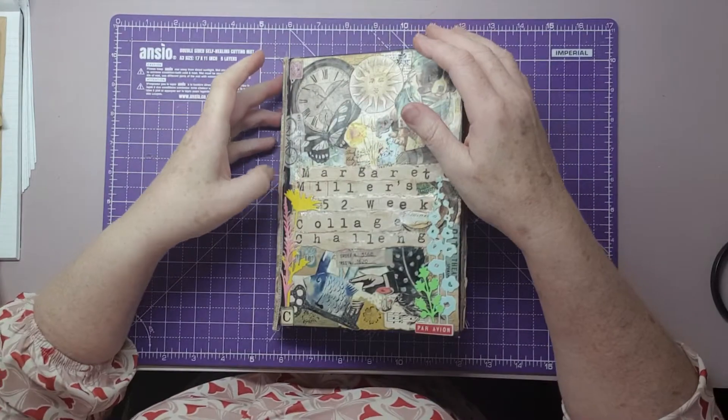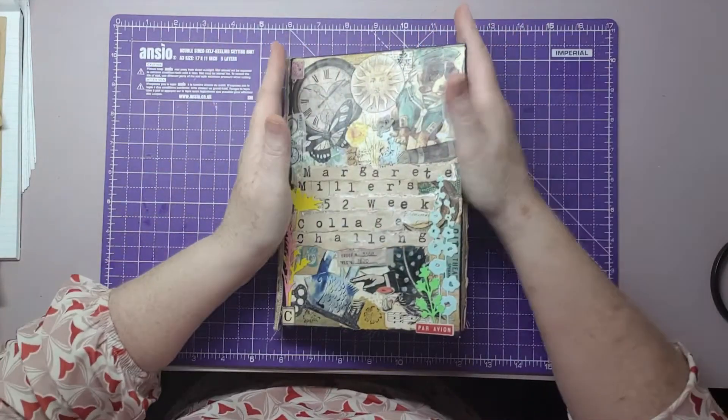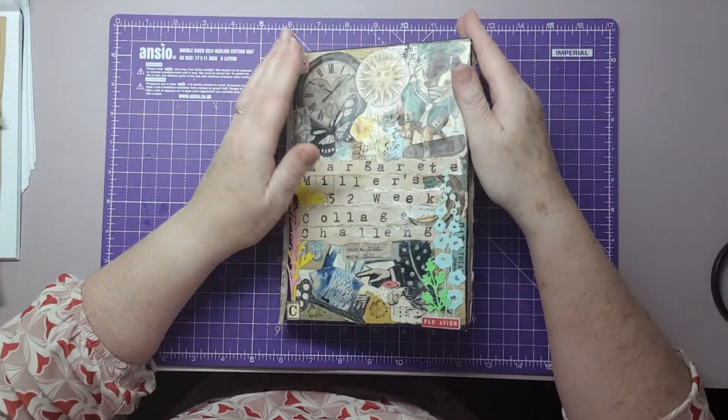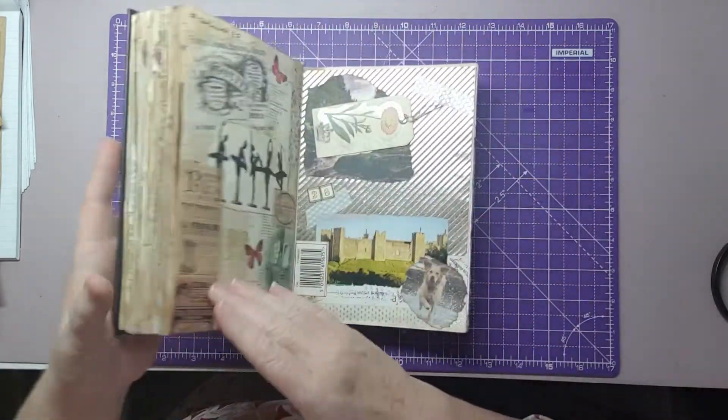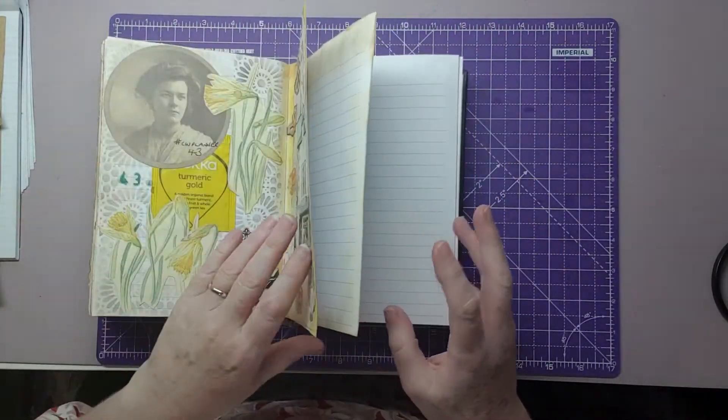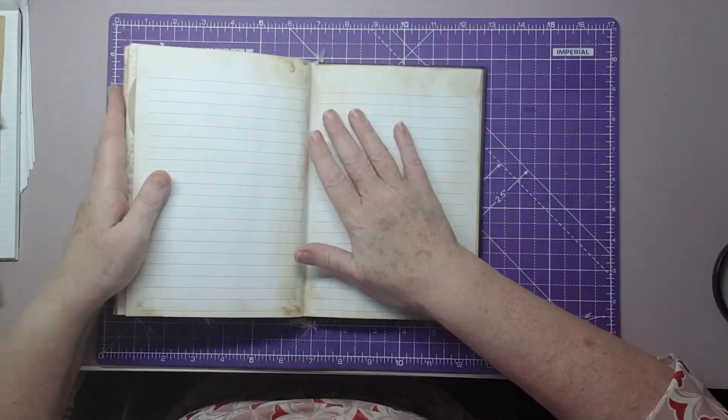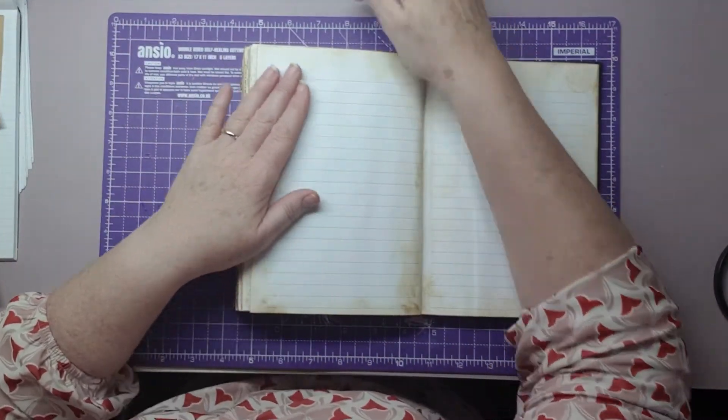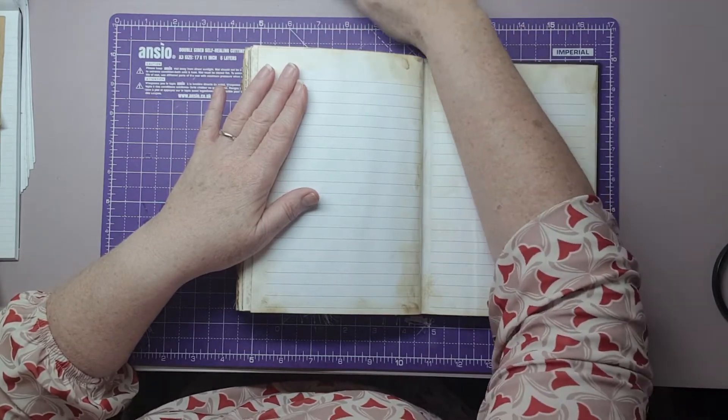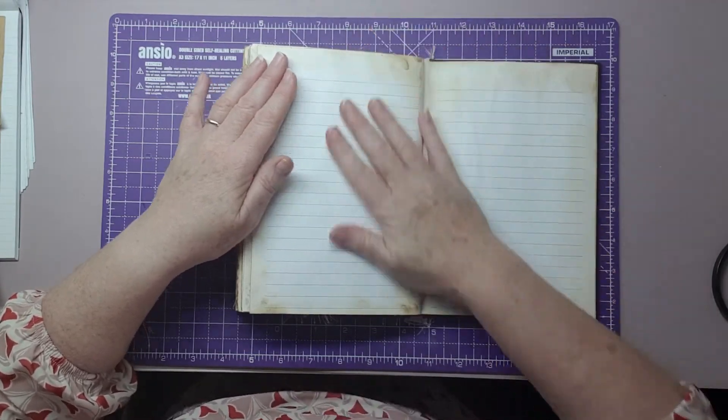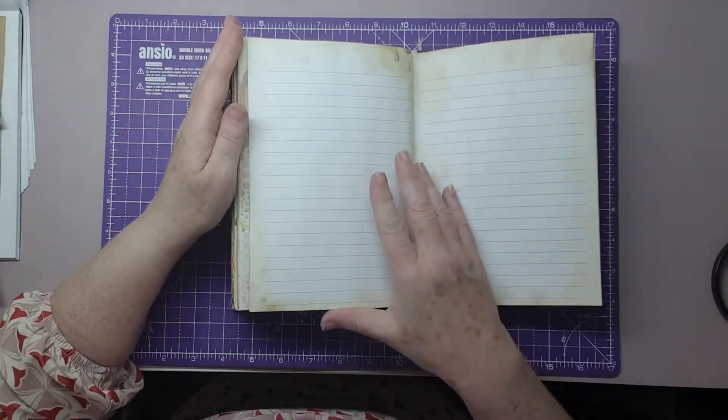Anyway, I've come on today to do another episode of Margarete Miller's 52 Week Collage Challenge, and we're on week 45 now. I don't want to kind of go too far ahead because 45 means we've only got 7 weeks left until the end of the year, which is a bit scary, I think.